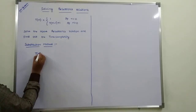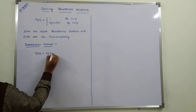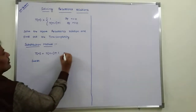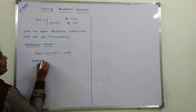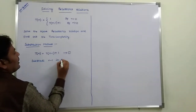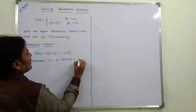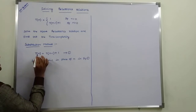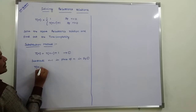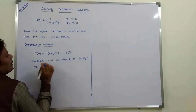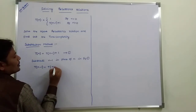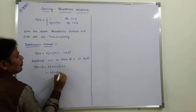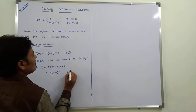We take T(n) = T(n-1) + 1. This is equation 1. Now substitute n-1 in place of n in equation 1. So T(n-1) = T(n-2) + 1. This is equation 2.